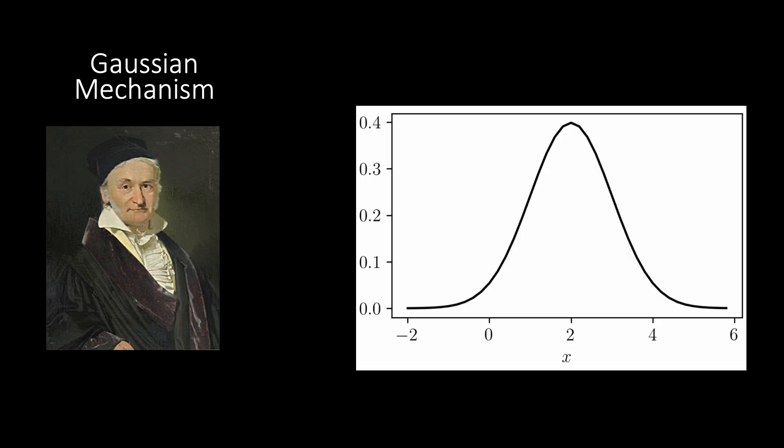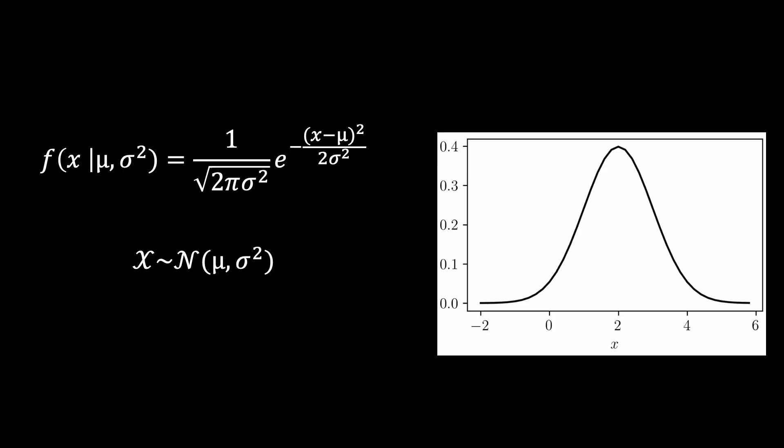Contrastingly, the Gaussian mechanism adds noise samples from a Gaussian distribution to query results, providing a smoother noise distribution and more flexibility in noise calibration. You can see the formula for the PDF, the probability density function here.